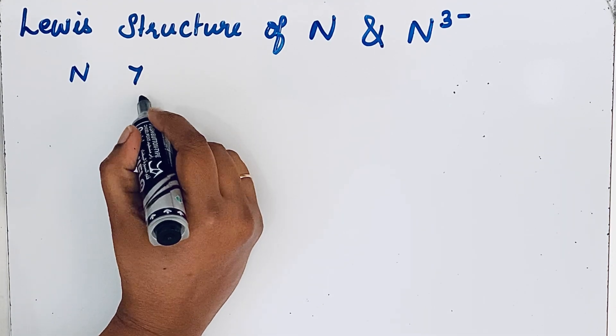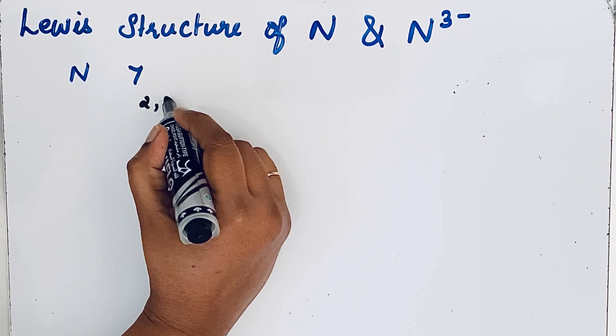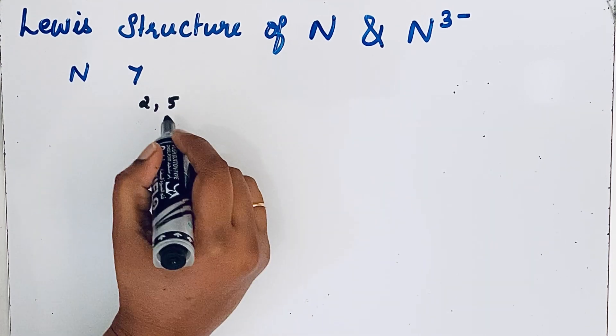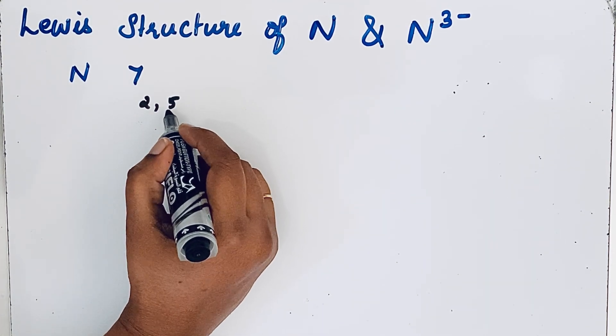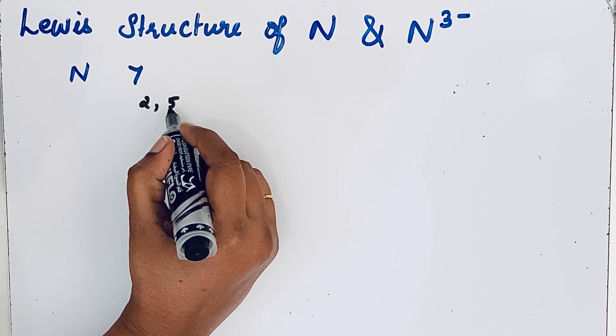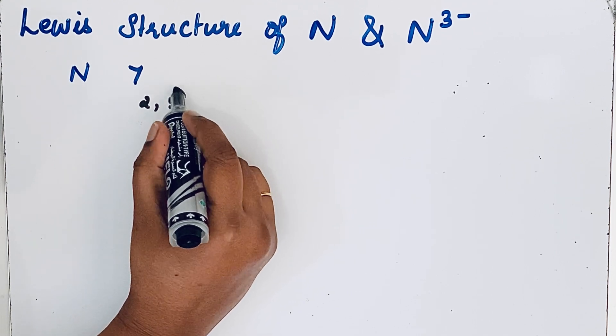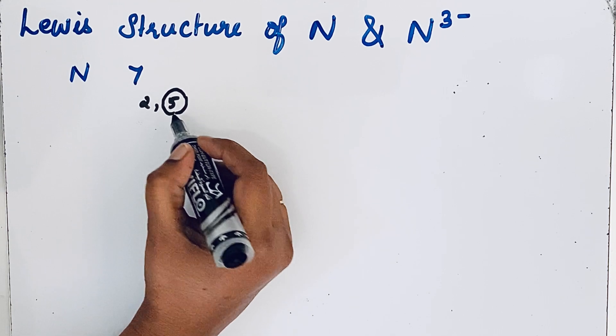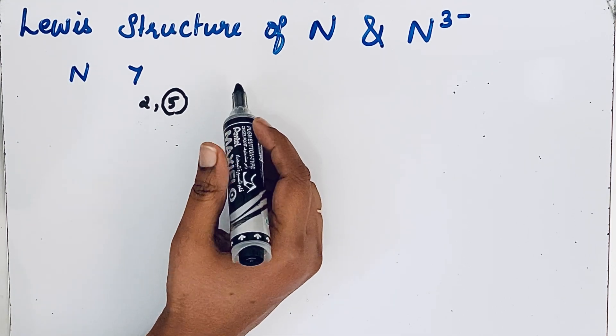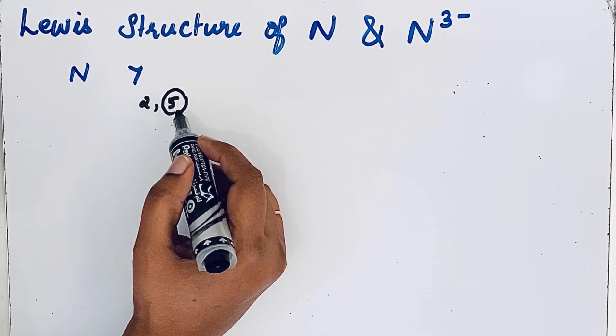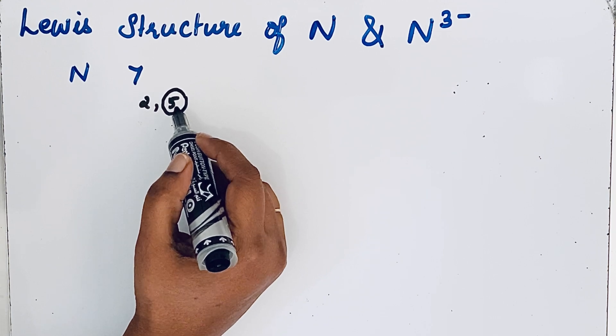We can write the electronic configuration as 2,5. The electrons which are present in the outer shell are called valence electrons. So for nitrogen, 5 is the valence electrons.